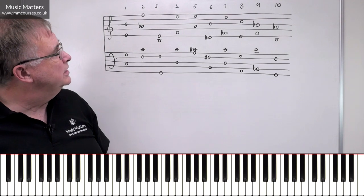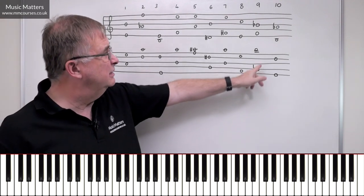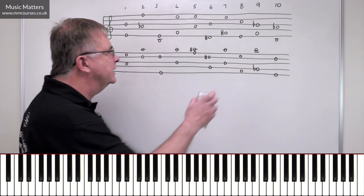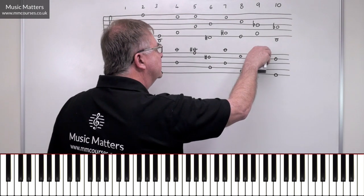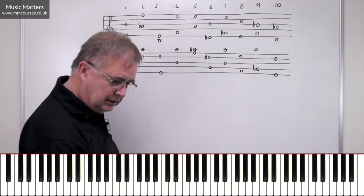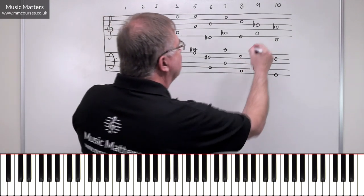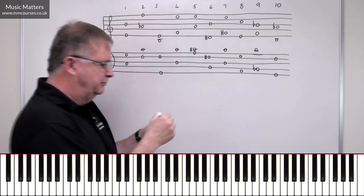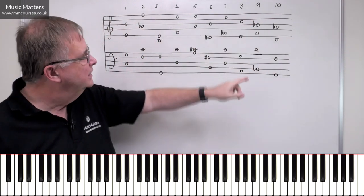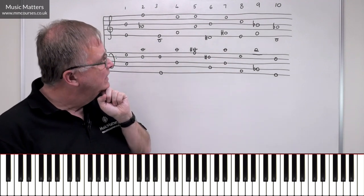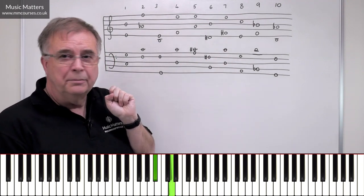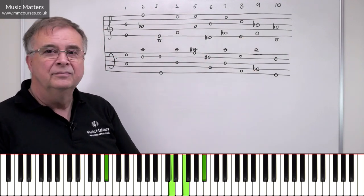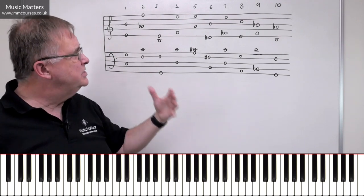Chord nine: B-flat, F, D, B-flat. That's a basic triad - B-flat, D, and F. D is a major third above B-flat and F is a perfect fifth, so it's a major chord. This is B-flat major - a straightforward diatonic chord.